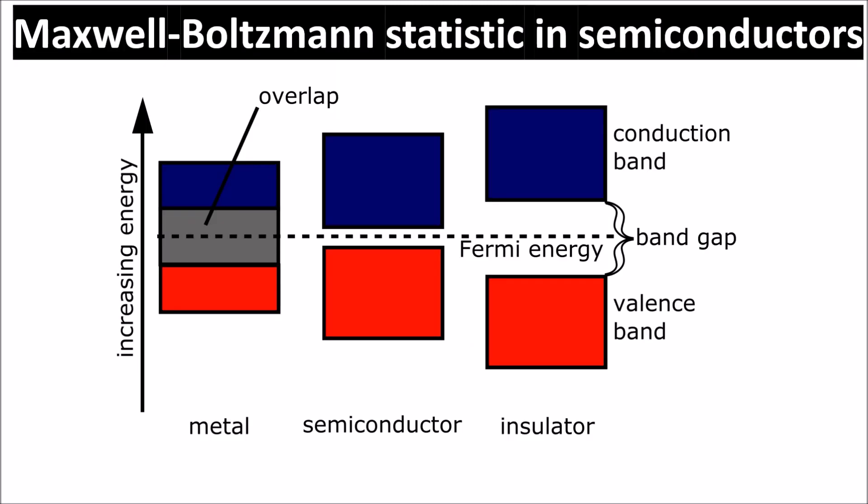We are going to use Boltzmann statistics in semiconductors. This is not the proper way because the electron is a quantum particle, not a classical one, but it is a very clear way to explain the p-n junction.